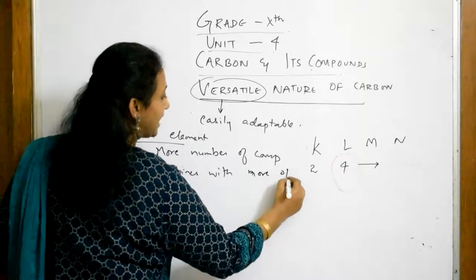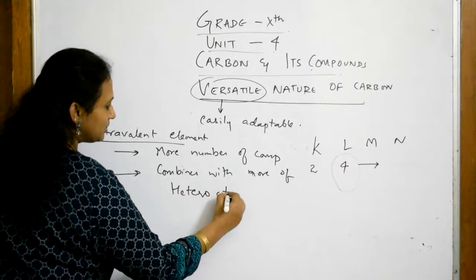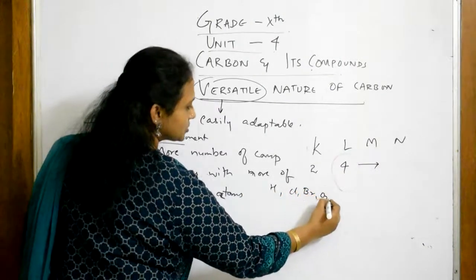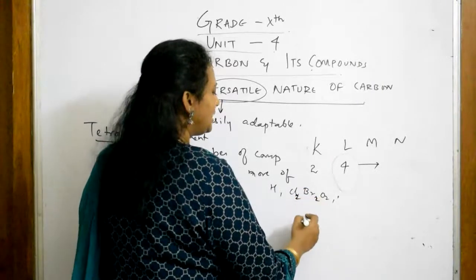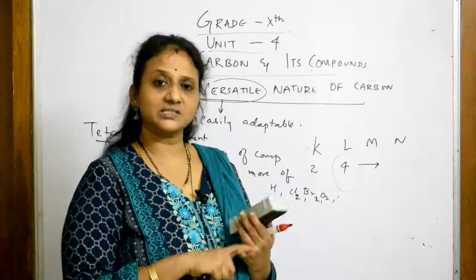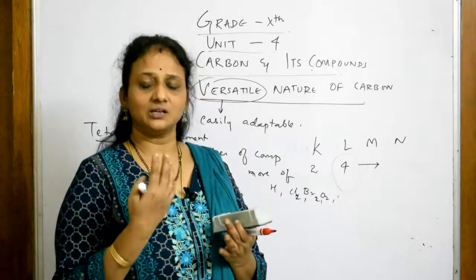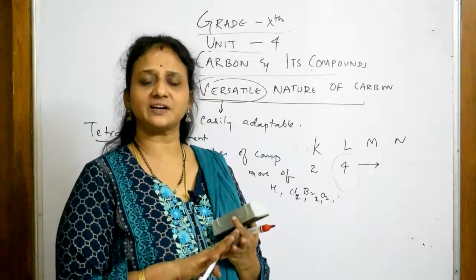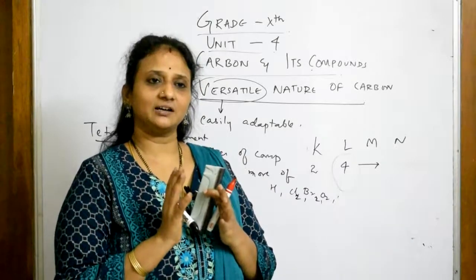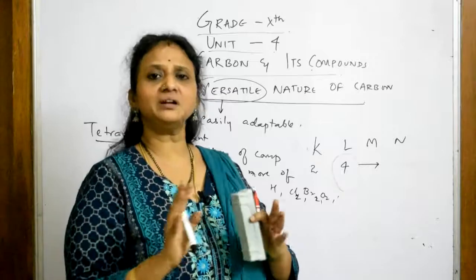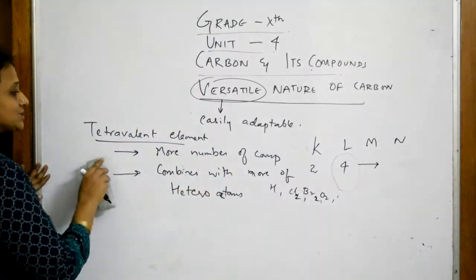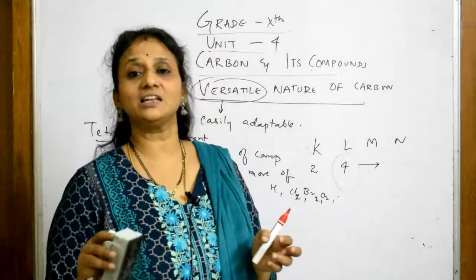It combines with more number of heteroatoms. What is heteroatoms? Hetero means different - hydrogen is one, chlorine is one, bromine is one, oxygen is one. Carbon combines with hydrogen, oxygen. It's there in materials, in our biosystems, the life systems, in our foods like carbohydrates, proteins, fats. It is there in everything which we are using. Tetravalency makes or allows the carbon to form more and more compounds.